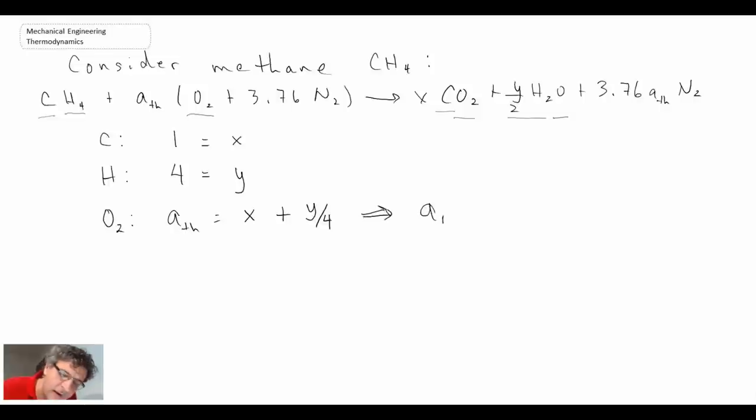With that, what we can say is that theoretical is equal to, well, we know x from here, so we can substitute that in, and we know y from here, and so we can make that substitution. We can then rewrite this as being 1 plus 4 over 4 is equal to 2.